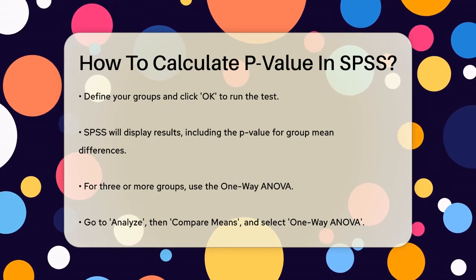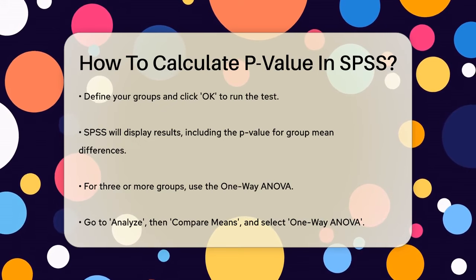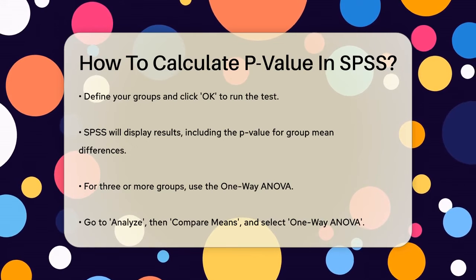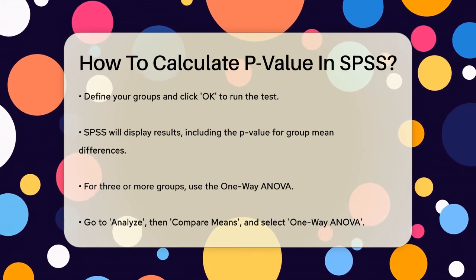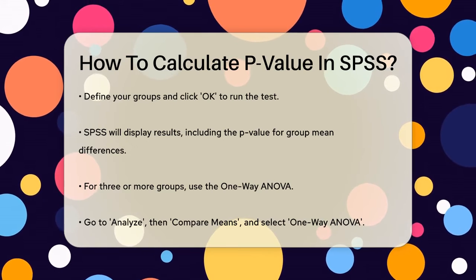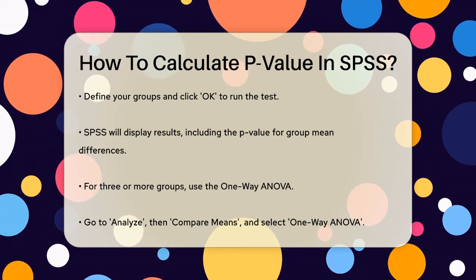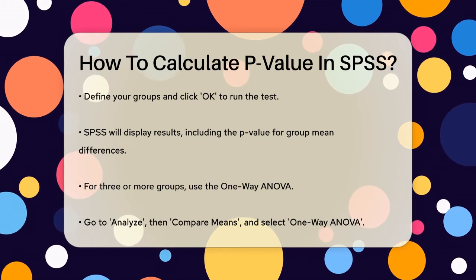SPSS will then display the results, including the p-value, which tells you if the differences between the group means are statistically significant.